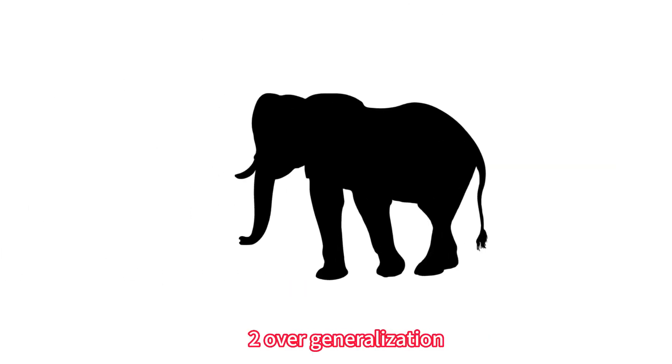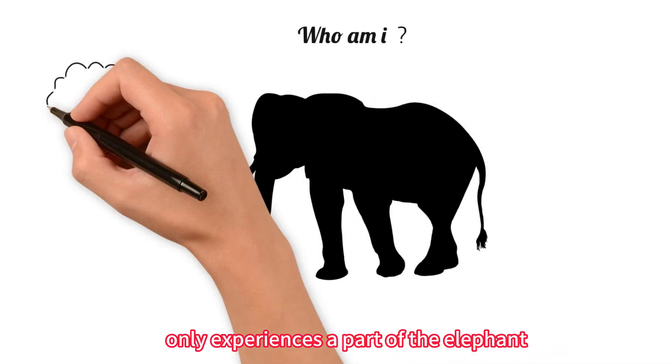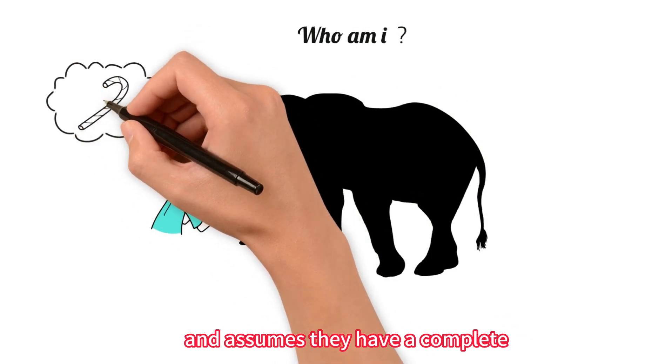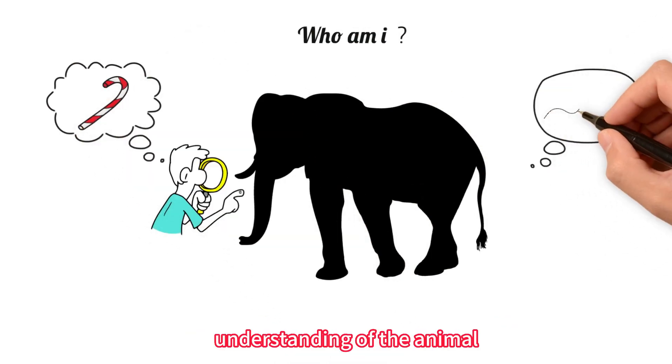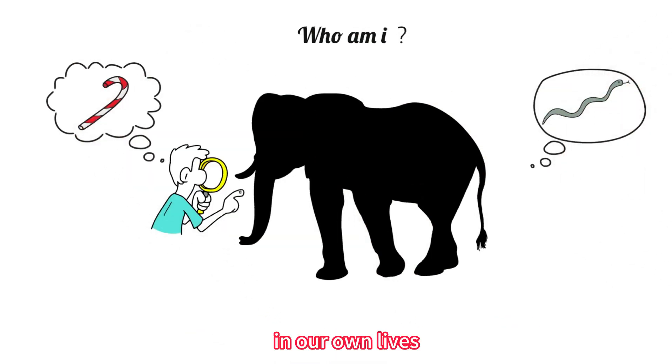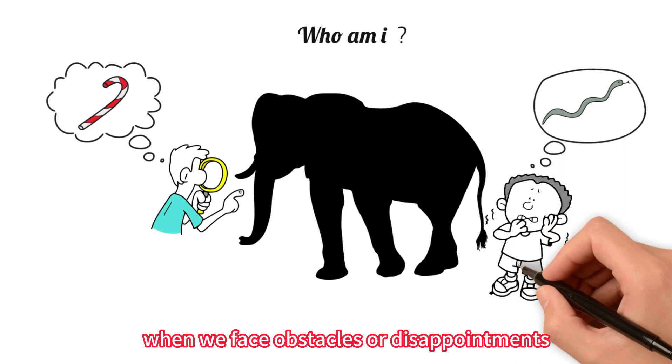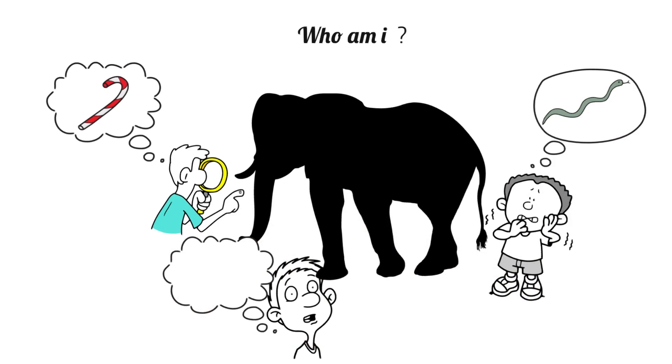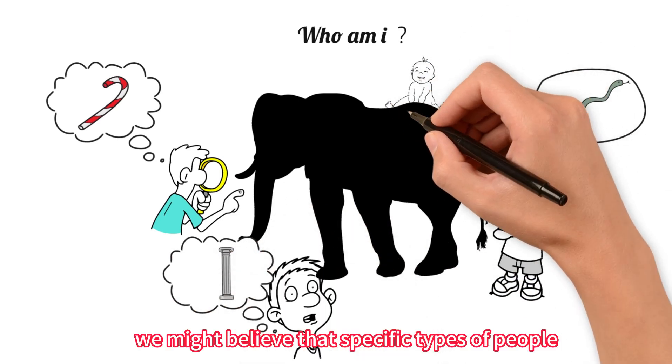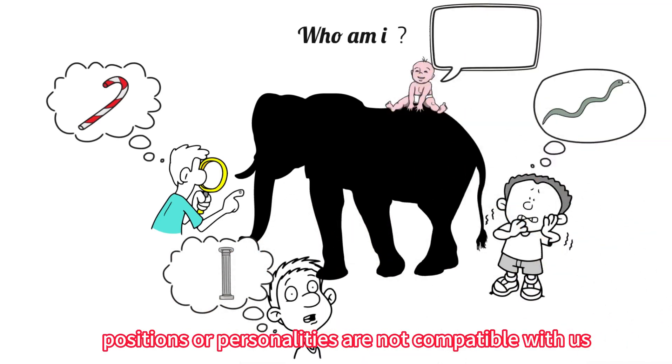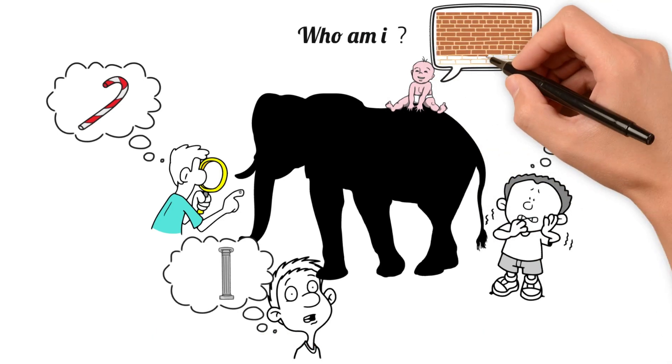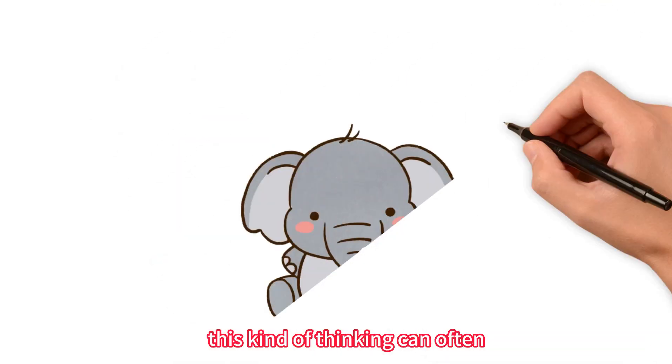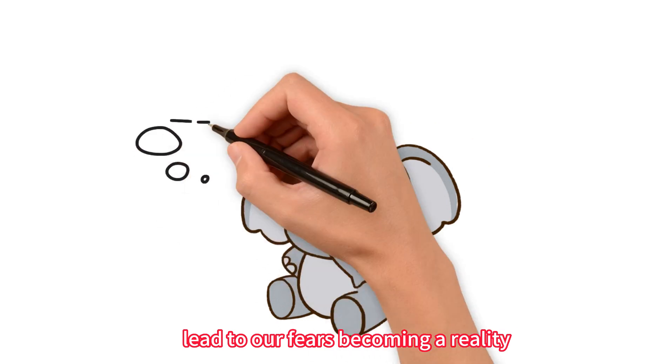2. Overgeneralization. Are you familiar with the story of the blind man and the elephant? In the story, each person only experiences a part of the elephant and assumes they have a complete understanding of the animal. In our own lives, when we face obstacles or disappointments, we often jump to conclusions and generalize our experiences. We might believe that specific types of people, positions, or personalities are not compatible with us. Unfortunately, this kind of thinking can often lead to our fears becoming a reality.